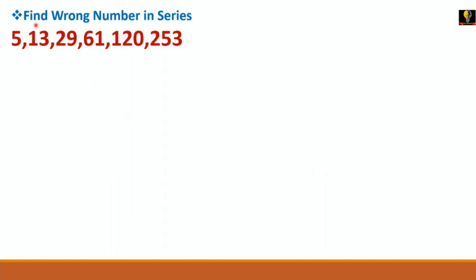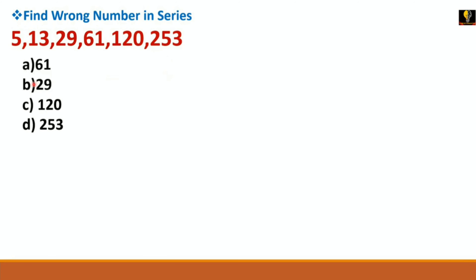The next problem: find the wrong number in the series. The series is: 5, 13, 29, 61, 120, 253. Options for the answer are A, B, C, and D. Your time starts now.